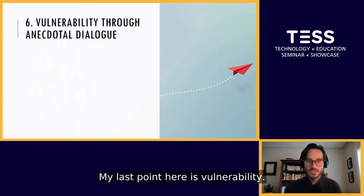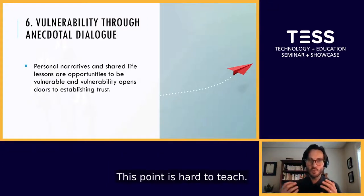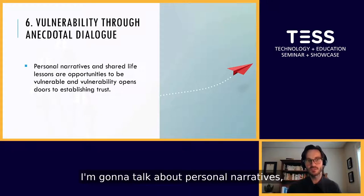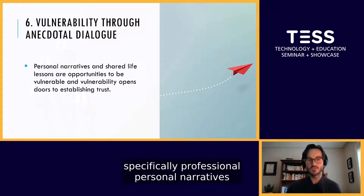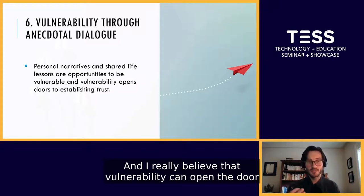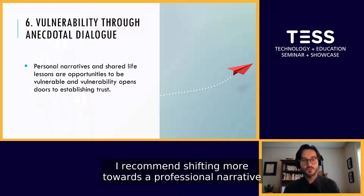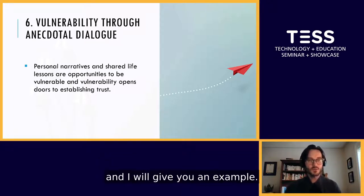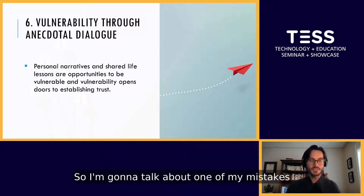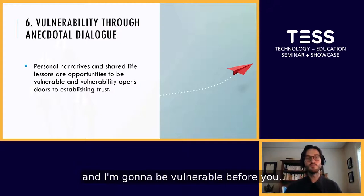My last point is vulnerability — also think of this as a kind of openness. I'm going to talk about it through anecdotal dialogue. This point is hard to teach. I'm going to talk about personal narratives — specifically professional personal narratives and shared life lessons — which I believe are opportunities to be vulnerable. I really believe that vulnerability can open the door to establishing trust with your group. I recommend shifting more towards a professional narrative, and I'll give you an example — one of my mistakes as a teacher.